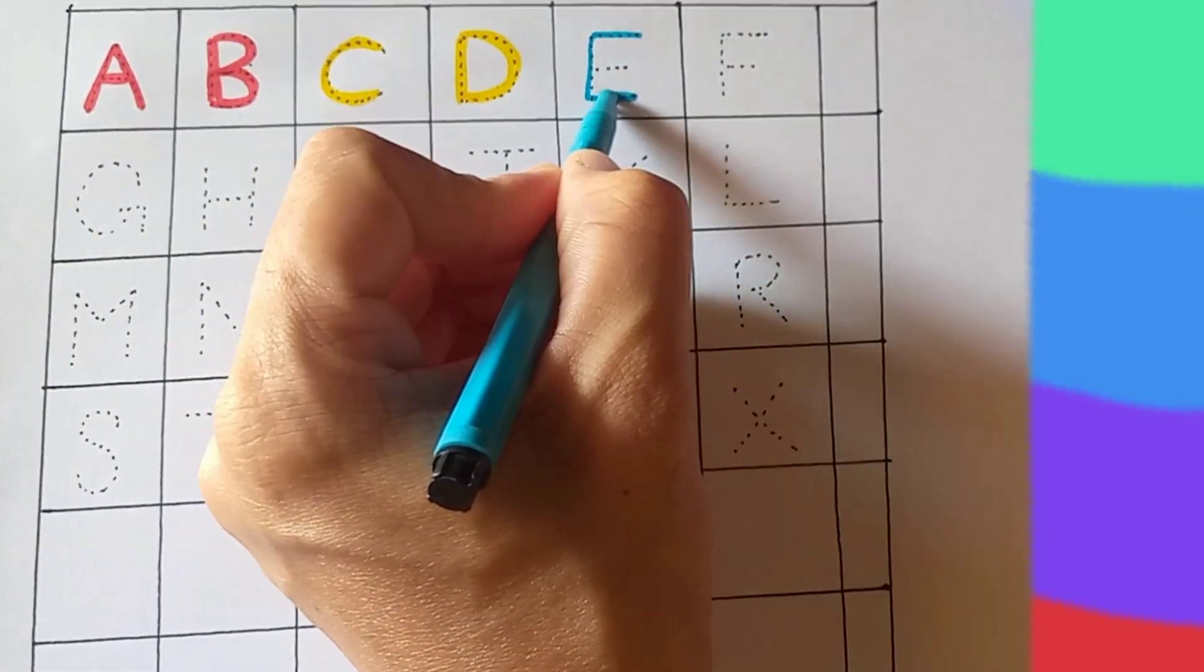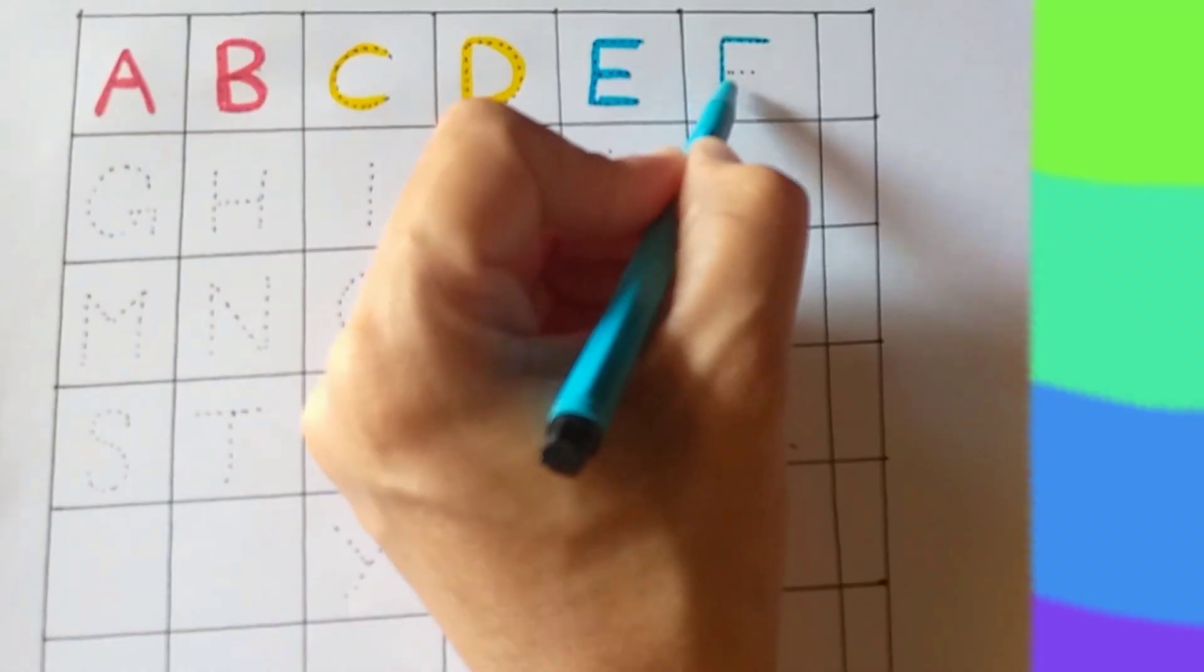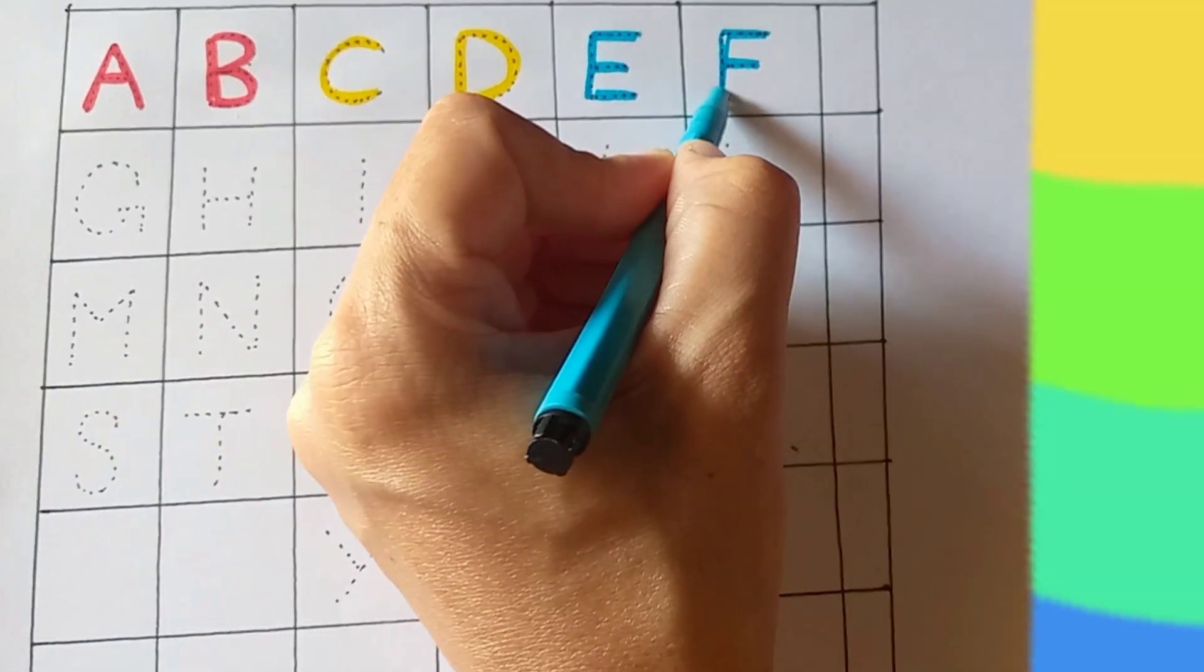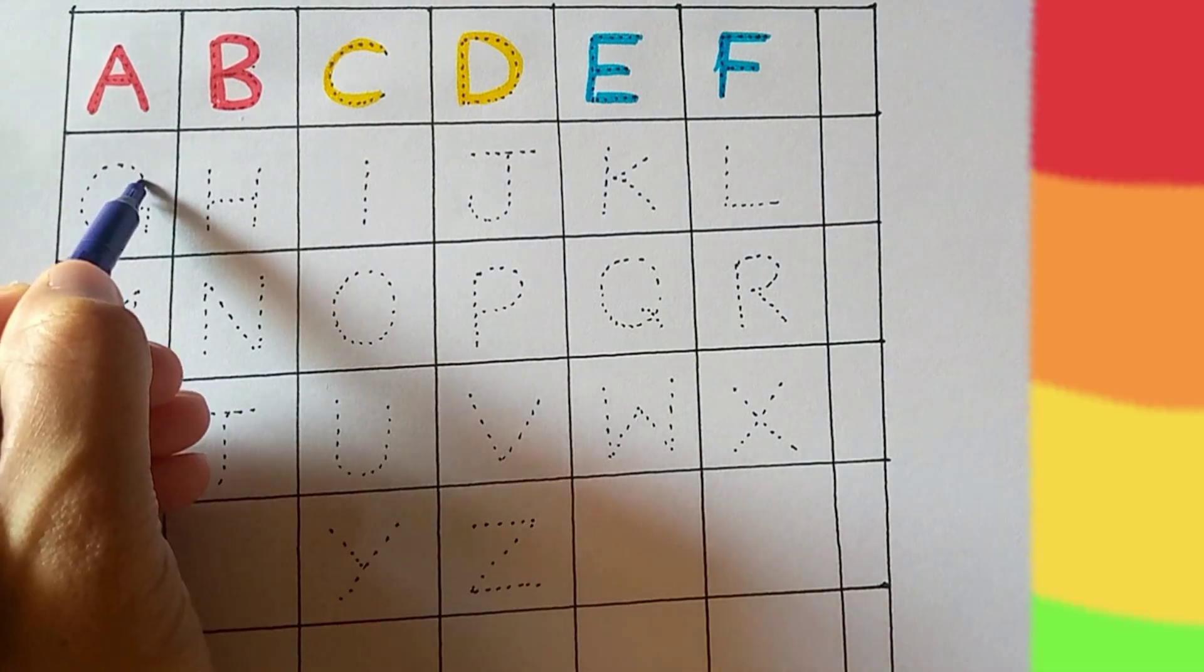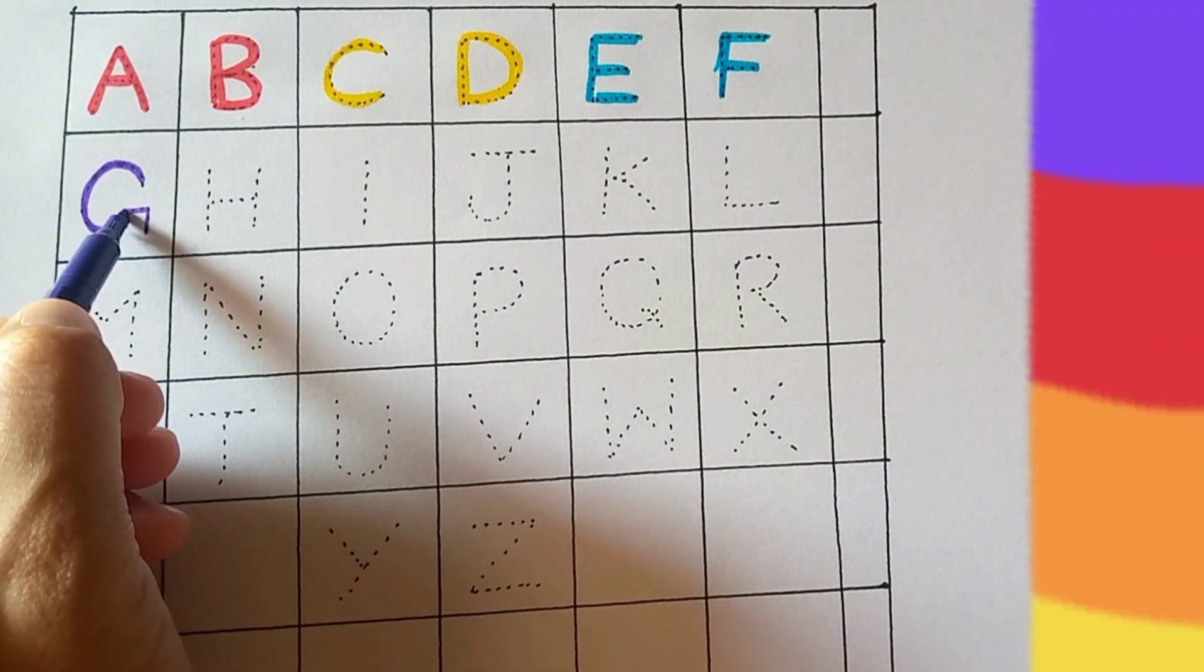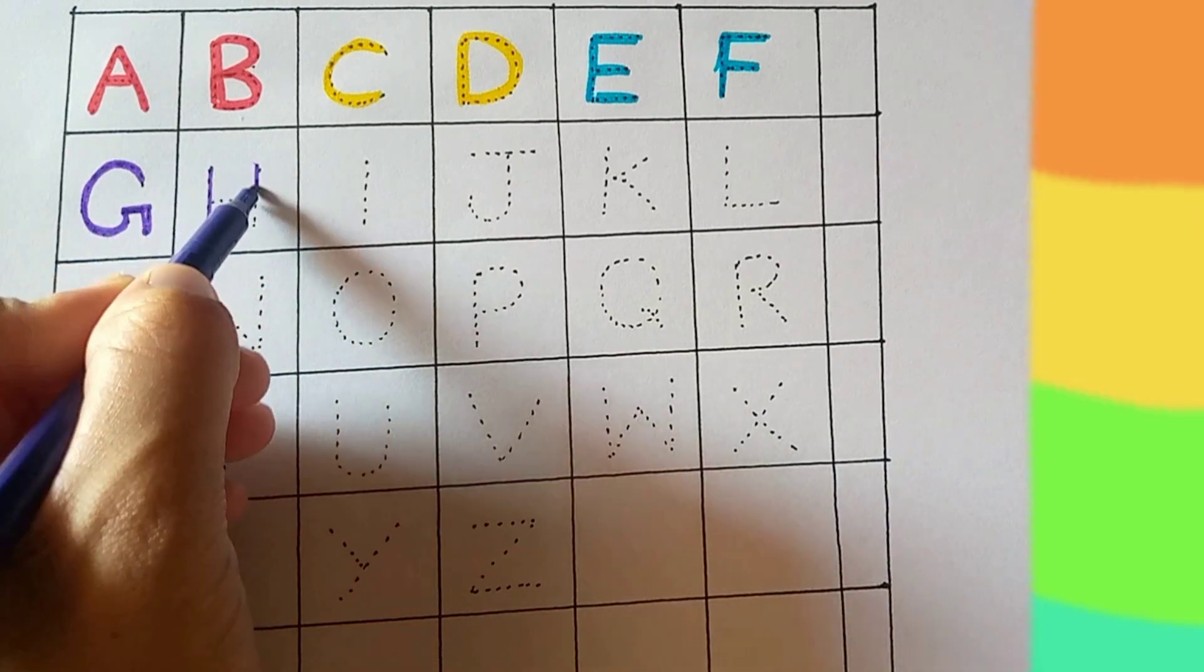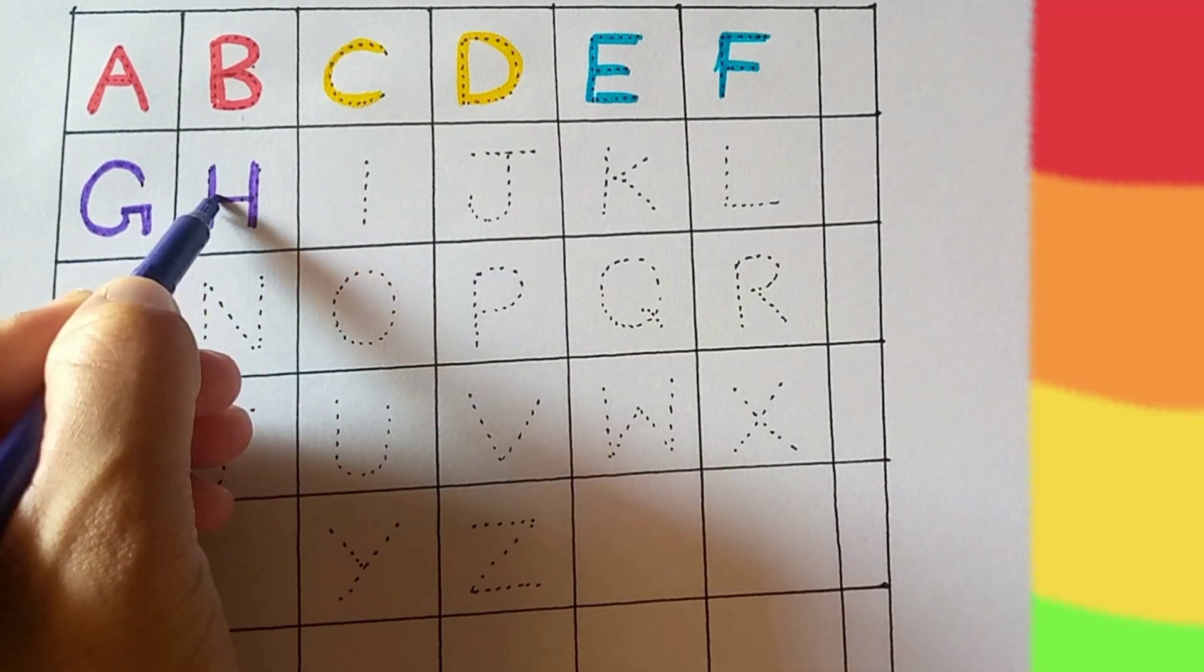E. E for Elephant. F. F for Fish. G. G for Goat. H. H for House.